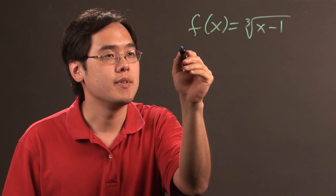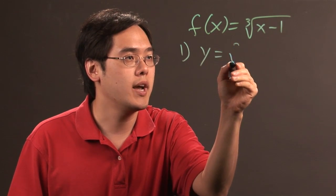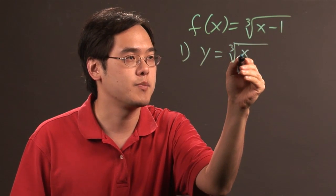The first step involves letting y equal f of x. So y equals the cube root of x minus 1.